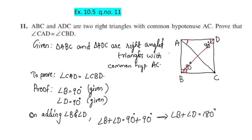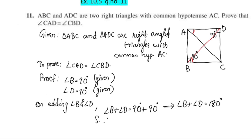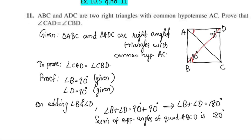Since angle B plus angle D equals 180 degrees, and these are opposite angles, quadrilateral ABCD is a cyclic quadrilateral.